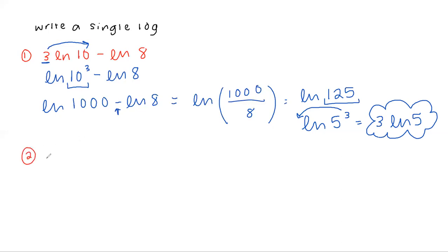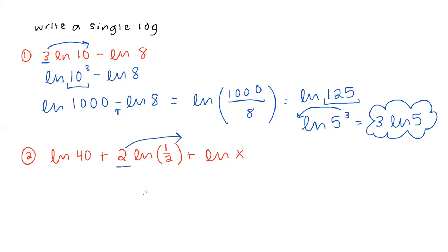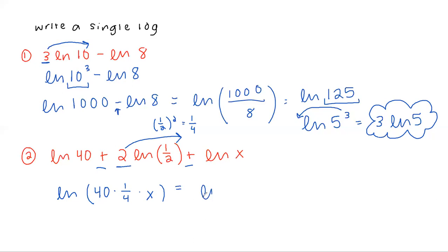Let's rewrite natural log of 40 plus 2 natural log of one-half plus natural log of x as a single log. Always start with the power property — if you see a coefficient, send it back to being an exponent first. So 2 natural log of one-half becomes natural log of one-half squared, which equals one-fourth. Now all terms are combined with addition, so we use the product property: ln of 40 times one-fourth times x. Simplifying 40 times one-fourth gives 10, so this is ln of 10x.